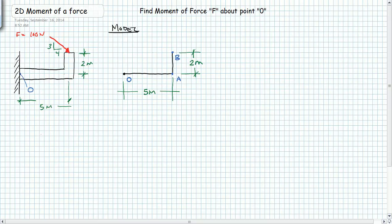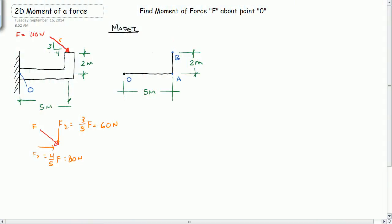And then we can take our force. We can take our 100 newtons, which is at an angle, and we can resolve it into a vertical component and a horizontal component. So Fy is equal to 3 fifths, because this is a 3, 4, 5 triangle, so 3 fifths of F, which is equal to 60 newtons. And Fx will equal 4 fifths of F, which is 80 newtons. So we can go ahead and apply those two here. We can apply 60 newtons down at point B and 80 newtons to the right.